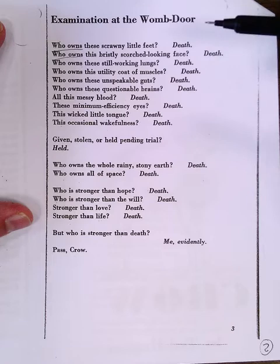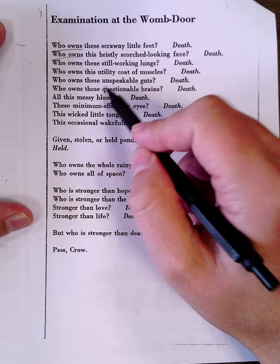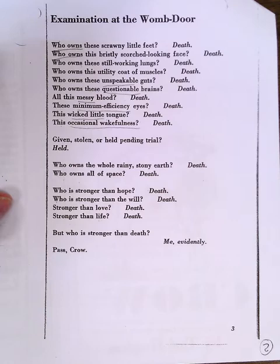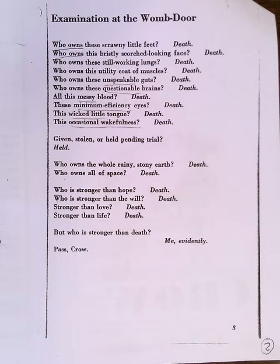Notice some of the adjectives that go along with the nouns. We have unspeakable guts, questionable brains, messy blood, minimum efficiency eyes, wicked little tongue, and occasional wakefulness. All of these parts of Crow are owned by death. Everything about him is owned by death.